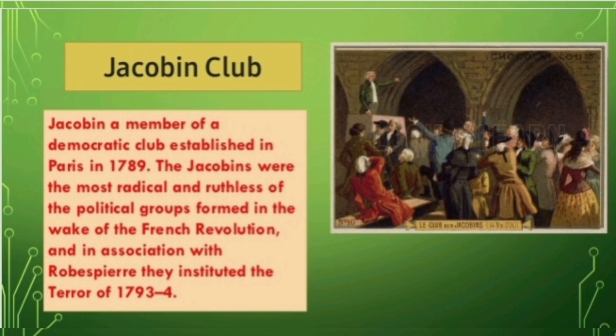Here is a picture of the Jacobin Club, which played a very important role in the revolution. People used to gather here and discuss all kinds of problems happening in the country. The leader of this club was Robespierre.